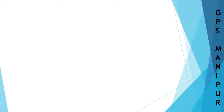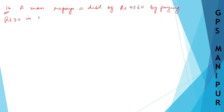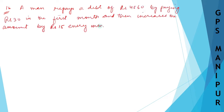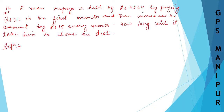Now we are doing Exercise 6.2, Question 16. Here is the question: a person has a debt of rupees 4860, paying rupees 30 in the first month, and then the amount increases by 15 each month.